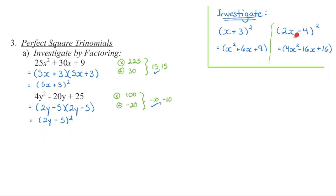Applying the same shortcut to another example: square the first term to get 4x squared. Double the product — negative 4 times 2x is negative 8x, times 2 gives negative 16x — because the outside and inside are the same value, appearing twice. Then square the last term: negative 4 times negative 4 gives positive 16.